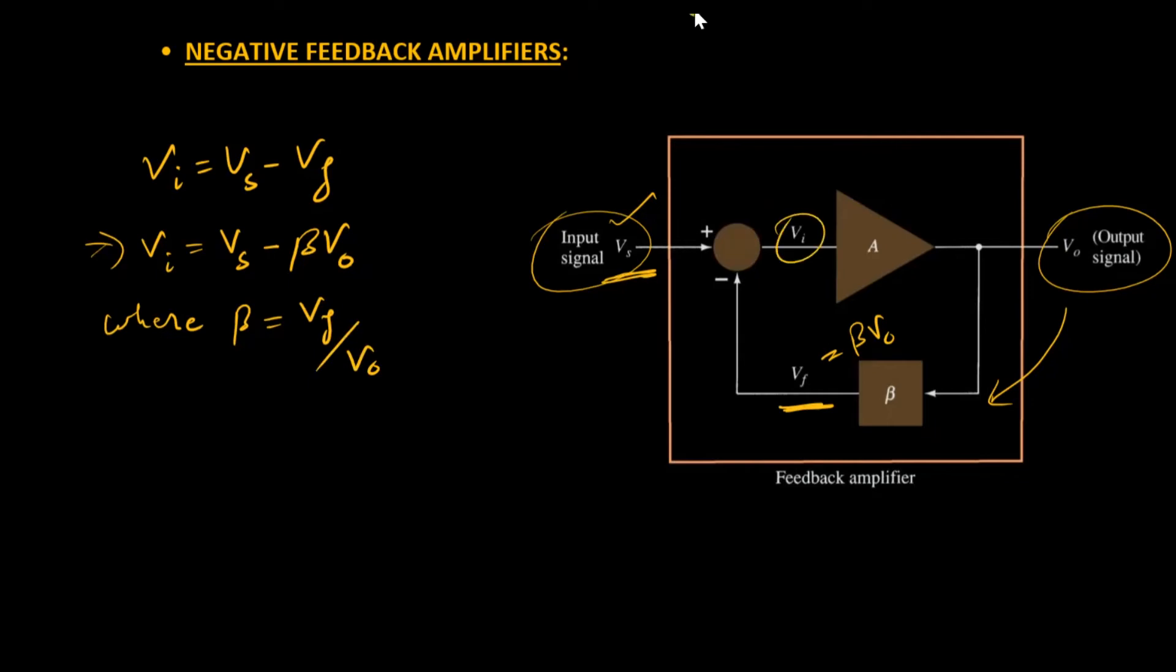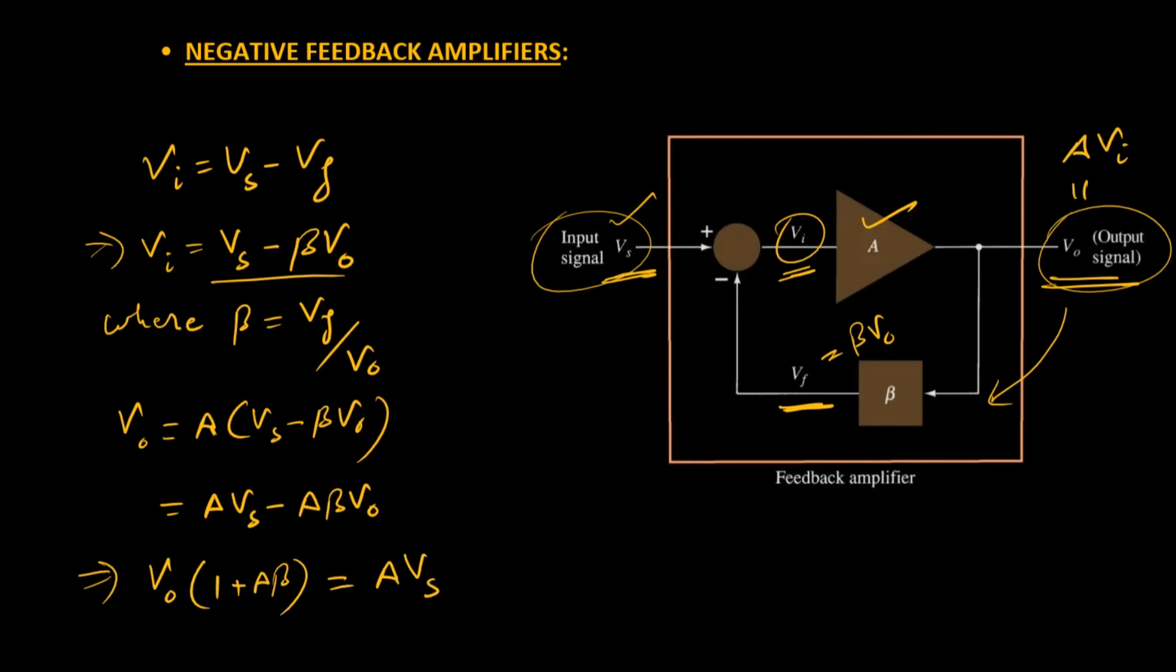We also know that Vi is the input to the amplifier A with gain A, and it will produce an output V0. So V0 will be simply equal to A times Vi, or we can write it as V0 equals A times (Vs minus beta V0). If we expand the brackets, the equation becomes A Vs minus A beta times V0. Let us take the V0 terms on one side and Vs on another side, so it becomes V0(1 plus A beta) equals A times Vs.